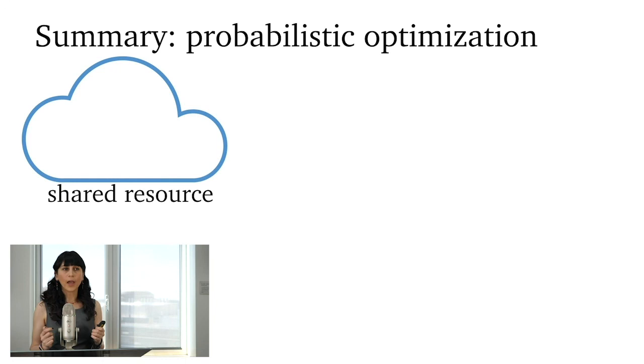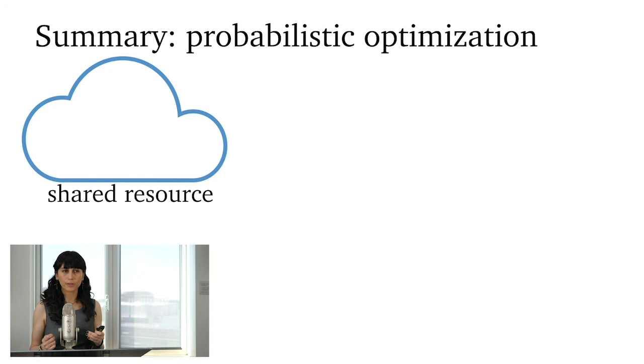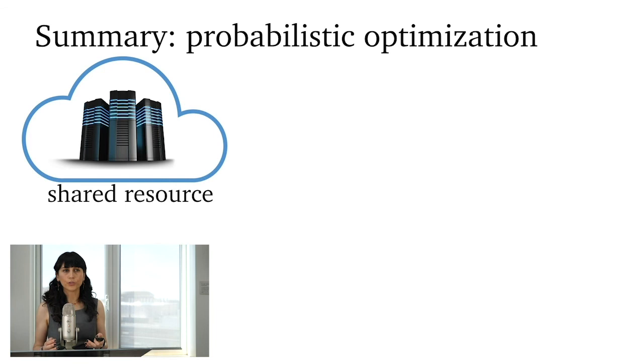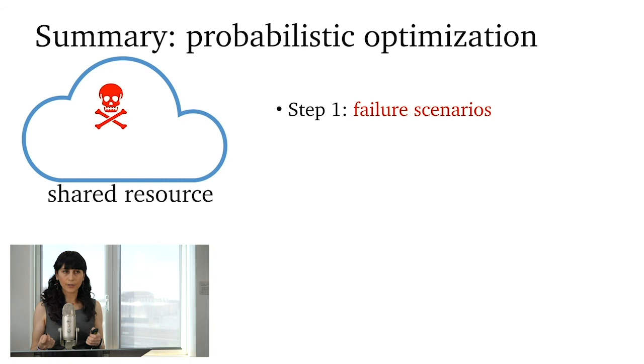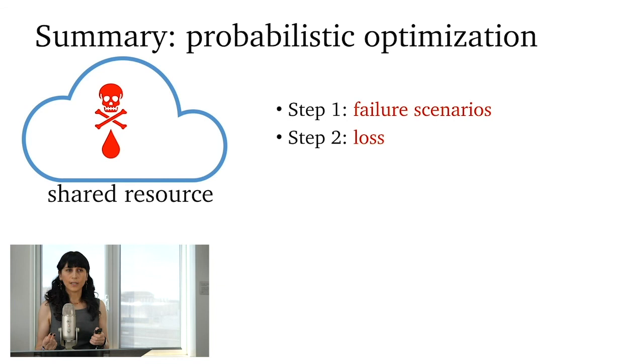So to sum up, the idea is using probabilistic optimization to solve the problem of resource sharing. Let's say we have a shared resource, anything like a set of computers or a data center, roads on the globe, or office space. The key point is to define a failure scenario for this shared resource. Define the loss associated with these failure scenarios. And define the probabilities associated with these failure scenarios.